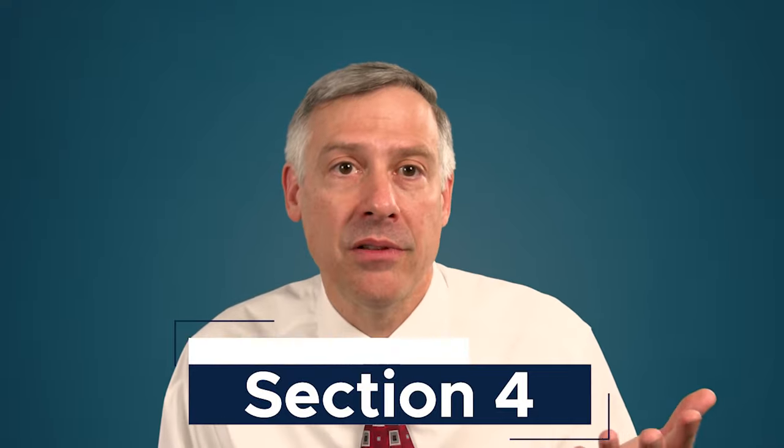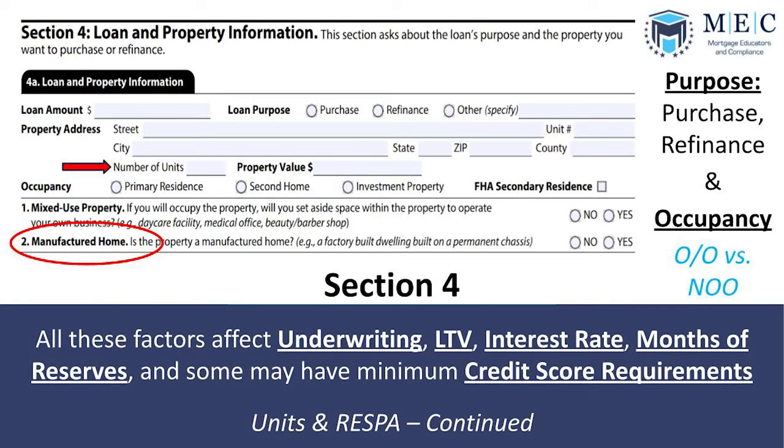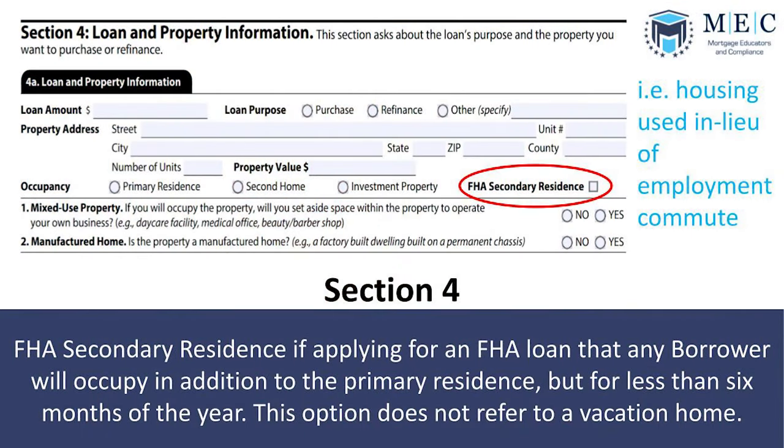Section 4 is for loan and property information. The borrower identifies whether it's a purchase or refinance, provides the address, the number of units, and the type of occupancy — owner occupied, investment/non-owner occupied, or manufactured home. These are very important as they affect underwriting, loan-to-value, loan program, interest rate, months of reserves required, and credit score requirements. Under RESPA — the Real Estate Settlement Procedures Act of 1974, Regulation X — a residential property is defined as a one-to-four family single-family dwelling, meaning up to four units. Anything more than four units is a commercial loan.